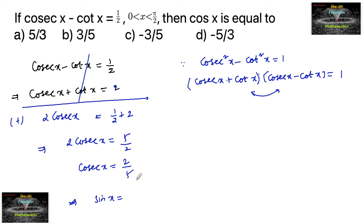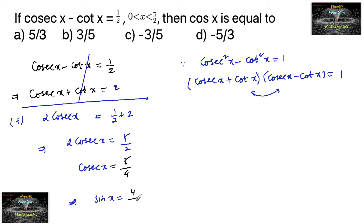Cosecant x is equal to 5/4, which implies sin x is equal to 4/5.